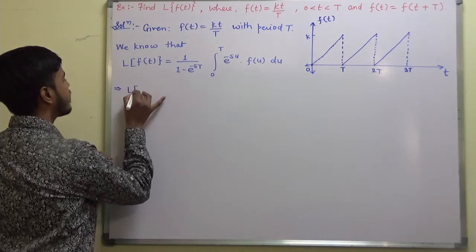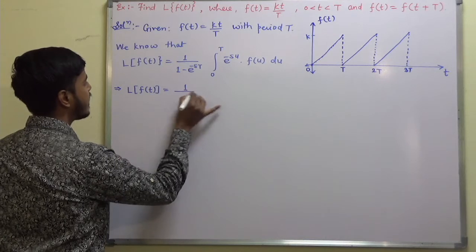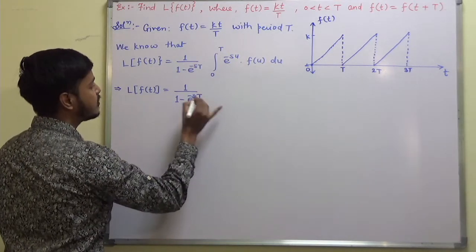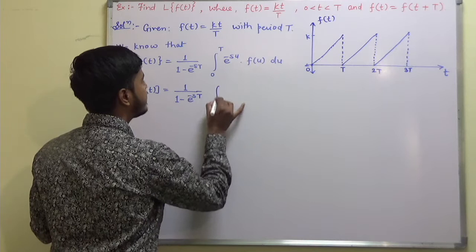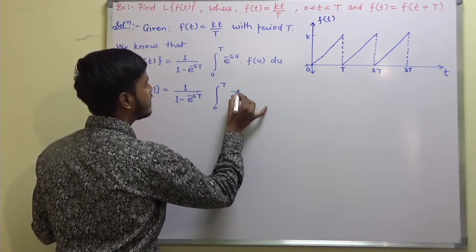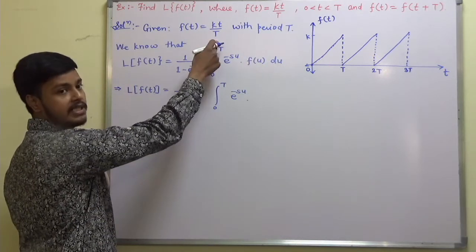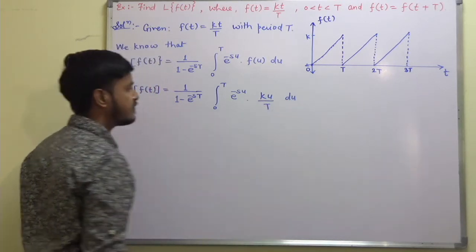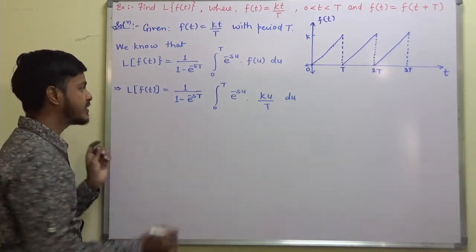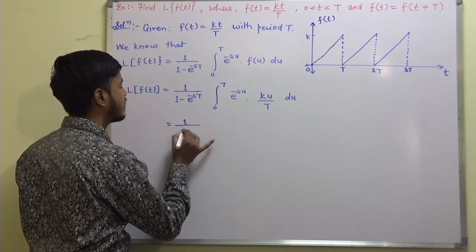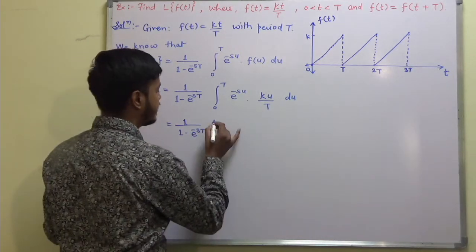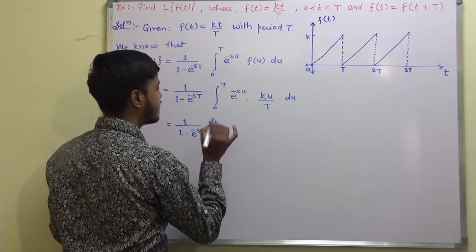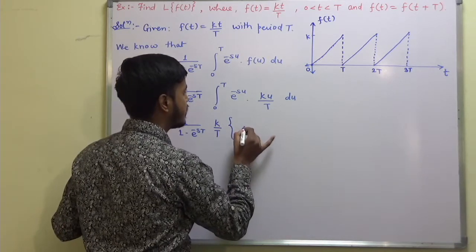So the Laplace transform of f(t) equals 1 upon (1 minus e^(−sT)) — here the period T equals T — times the integral from 0 to T of e^(−su) times f(u) du. Since f(t) = kt/T, we have f(u) = ku/T. We can take the constant k/T outside and apply integration by parts to the remaining integral.